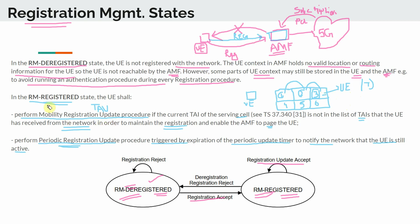To sum up: in the registered state, we perform a mobility registration update if the tracking area changes, or if the timer expires for the periodic update. In the deregistered state, nothing really happens in terms of signaling, but both the UE and the AMF can retain certain parts of the context. That is it for the registration states. Next, we will look into the connection management states.